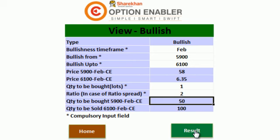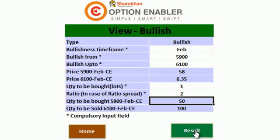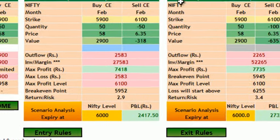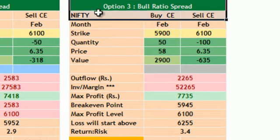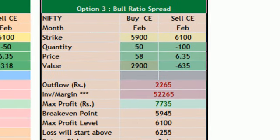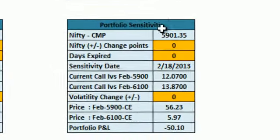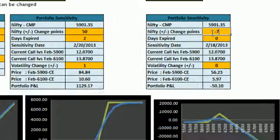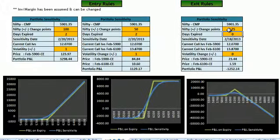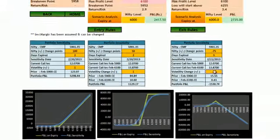We will be displayed a screen which will show us our flow for the strategy, the probable margin, the max profit levels, the breakeven point, the loss level, and the return-to-risk ratio for this particular trade. And again as usual we have Portfolio Sensitivity Analysis, where you need to punch in the three data points which will give you a probable profit or loss for your particular strategy.